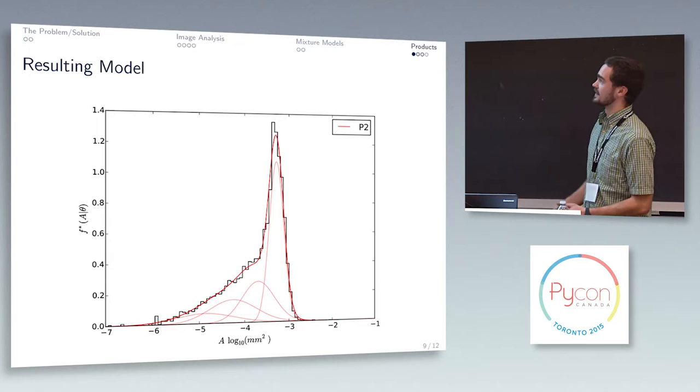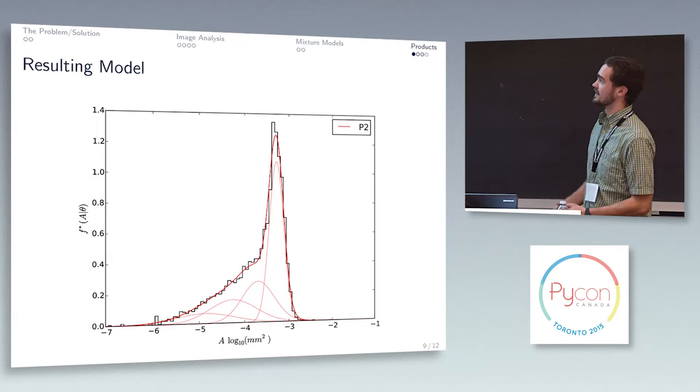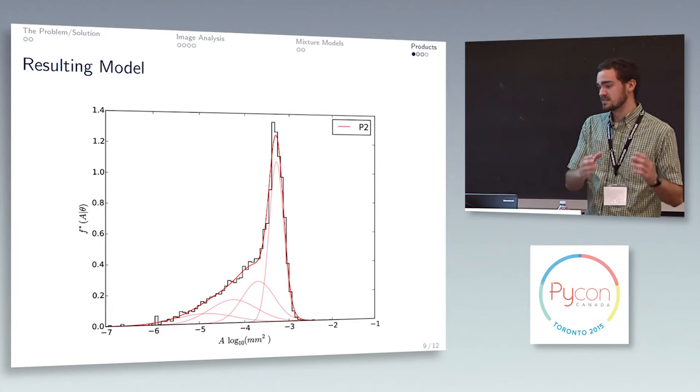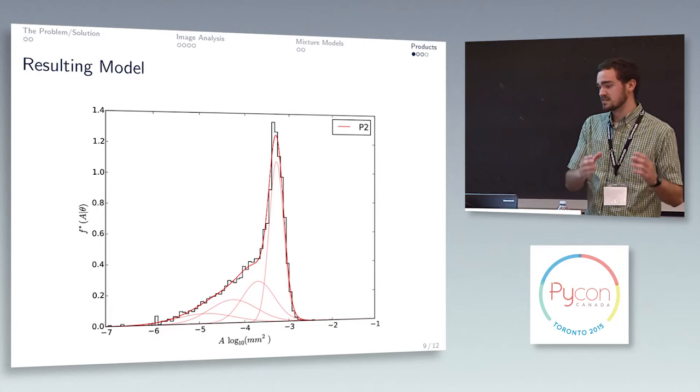And so the final product, the thing that we want and now that we have, is this. You can see there's a histogram of actual data, and then components in there. Each one's just a Gaussian distribution. Add all those up and you get the dark red one. So now we have numbers that we can associate with process parameters, and then using a bunch of different process parameters, come up with how the process affects the structure.